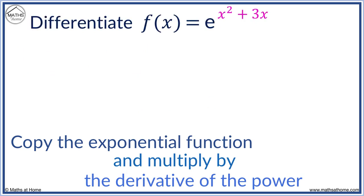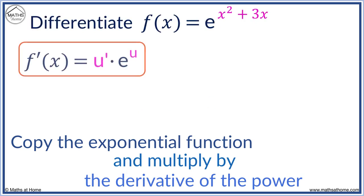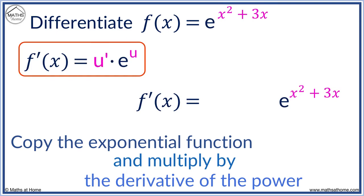Differentiate e to the x squared plus 3x. We copy e to the x squared plus 3x. Now, we differentiate x squared plus 3x to get 2x plus 3.